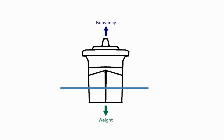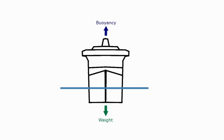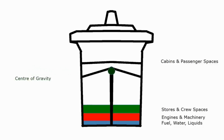Those points are the center of gravity for the weight and the center of buoyancy for the buoyancy. Let's take a look at the center of gravity first. In this diagram I've added a few colors for different areas of the ship. If everything in the ship weighed exactly the same, the center of gravity would be slap bang in the middle.